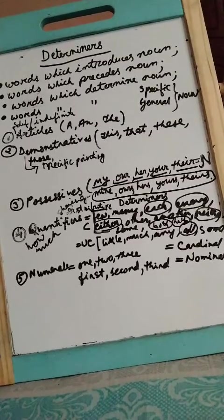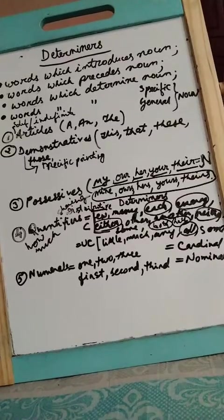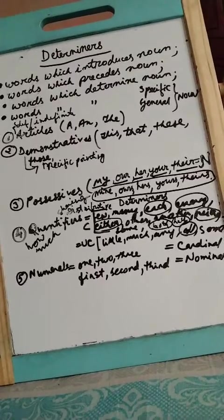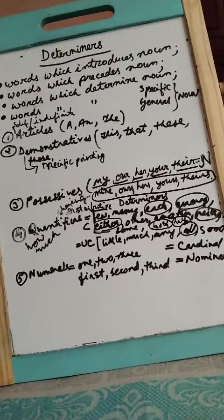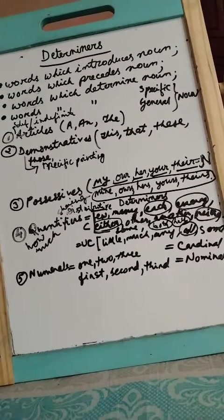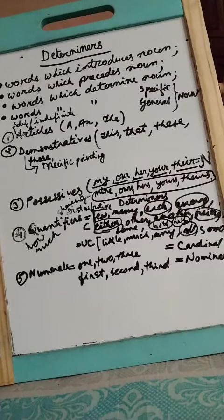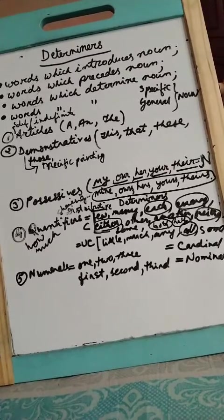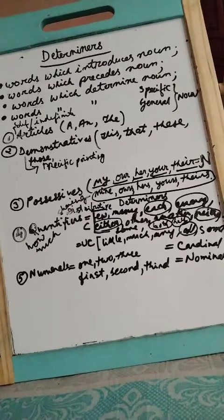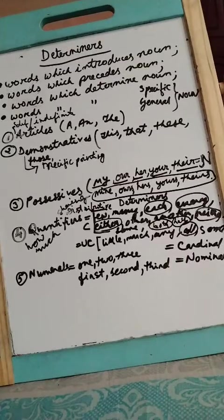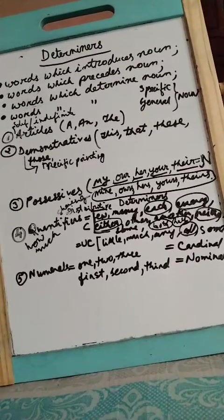Look at the first point. Words which introduce nouns are called determiners, or words which precede the noun, which come before a noun. Determiner means it comes before the noun. Words which determine specific and general nouns, they are the determiners. From the word determiner itself you can understand that which determines.